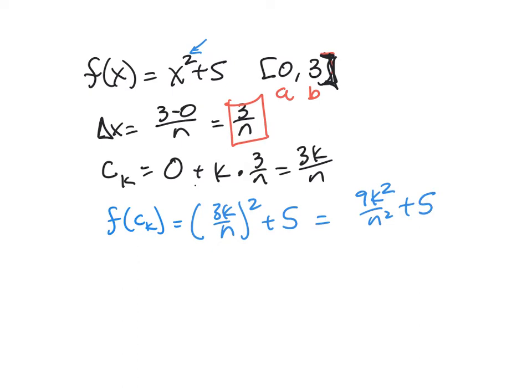We do all of that so that we can write out our area expression. The area expression is A equals the limit as N approaches infinity of the sum from k equals 1 to N of F of C sub k, which we have in the blue here, is 9k squared over N squared plus 5 times delta x, which is 3 over N. And I'm going to pick up with this on the next slide, and I'll finish off this algebra.